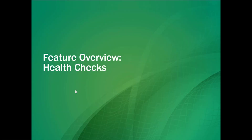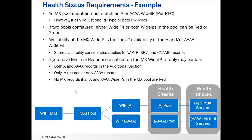In this section, we're going to talk about health checks and how they relate to the new service types or new resource record types available on the BIG-IP in version 12.0. We're going to illustrate this by looking at an example of health status requirements, with an example wide IP and pool showing different scenarios of availability and how that will affect the health of a particular wide IP.